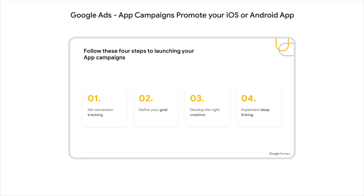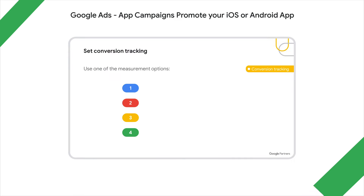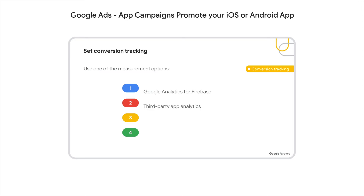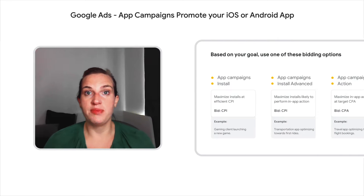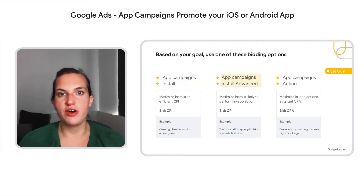Let's look at Universal App Campaign creation and best practices. There are four main steps to launch your Universal App Campaign. Step 1 is implementing conversion tracking. Step 2 is defining your goal. Step 3 is developing and implementing the right creative. Step 4 is implementing deep linking. For conversion tracking you have four options: Google Analytics for Firebase or a third-party app analytics tool, the app conversion tracking and remarketing API, or for Android apps you can also track conversions with Google Play. The next step is defining your goal, because that determines the bidding options you should select. There are three options: optimize for app installs, App Install Advanced, or optimize for actions.